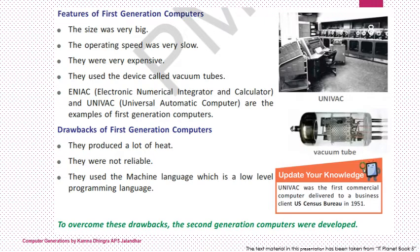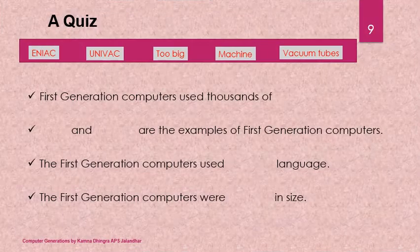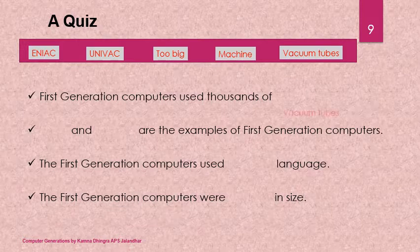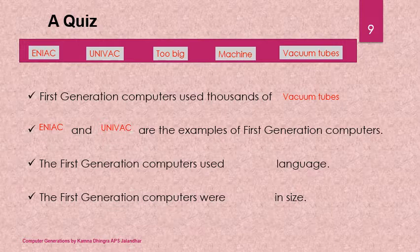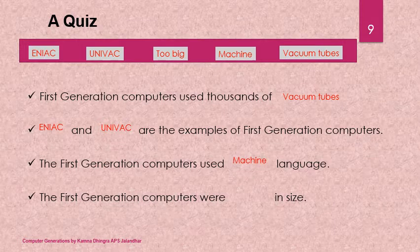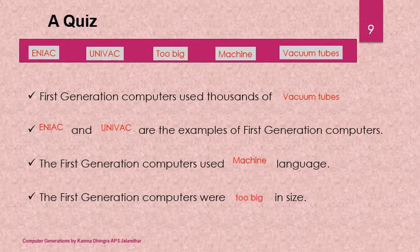Quiz recap: First generation computers make use of vacuum tubes. Examples are ENIAC and UNIVAC. They use machine language — the language of zeros and ones, a machine-dependent language — and were too big in size.